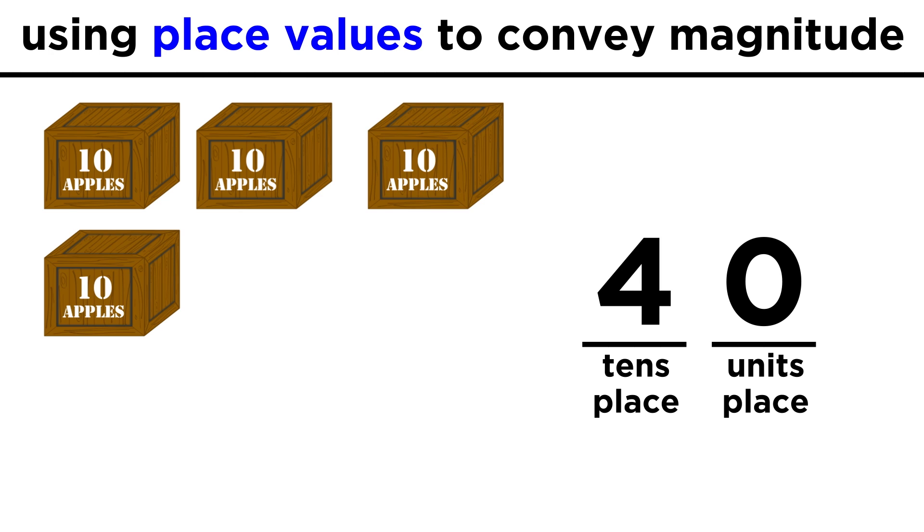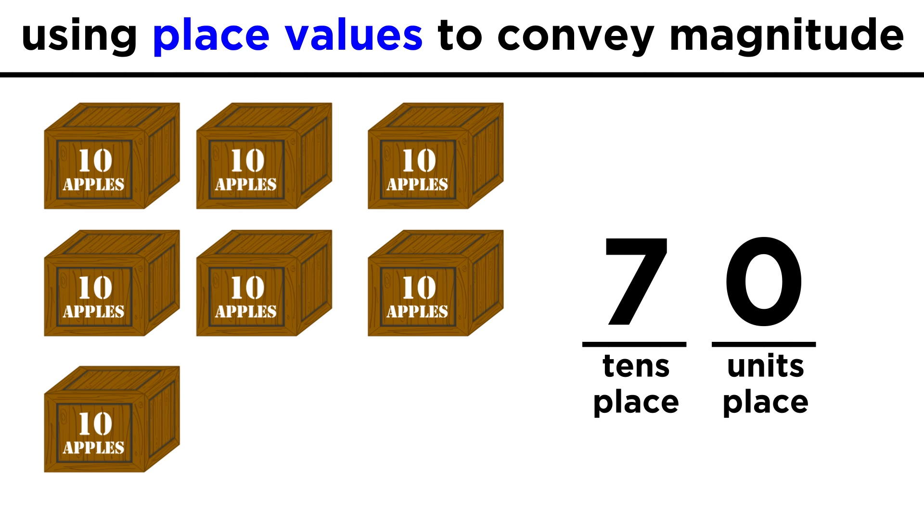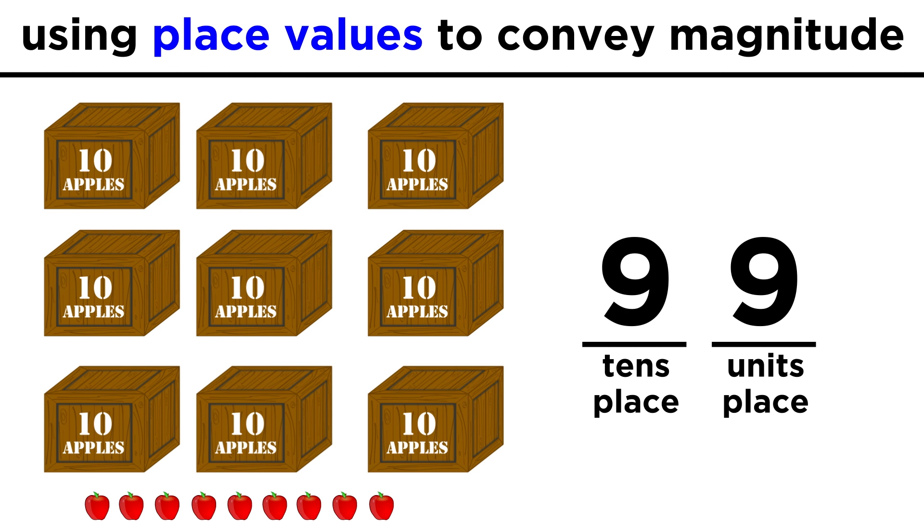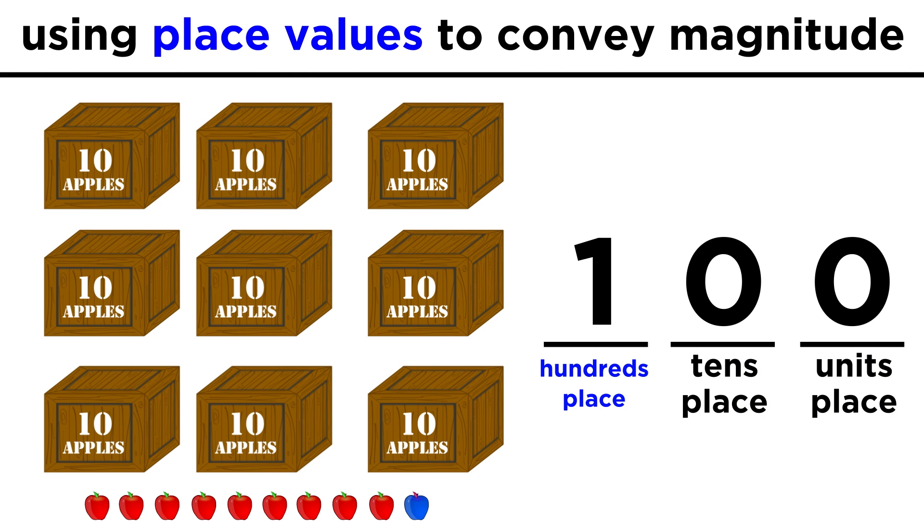This continues through thirty, forty, fifty, and when we reach ninety-nine, we've maxed out both the units place and the tens place, so we have to add the hundreds place. We place a one here, indicating that we have reached one hundred, while the other two places go back to zero.